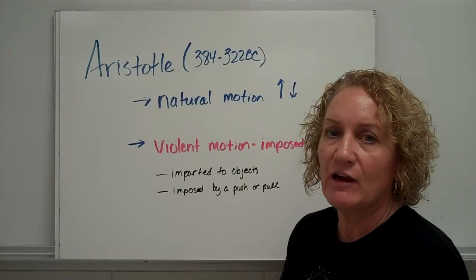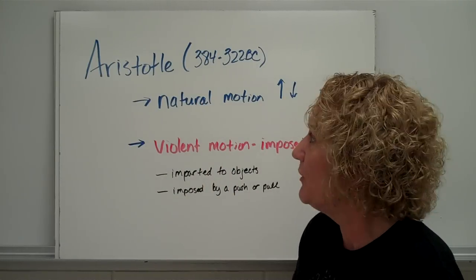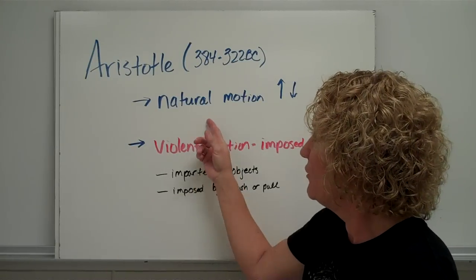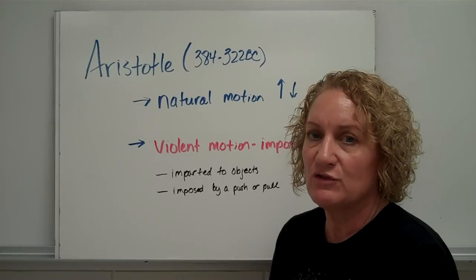We're going to start with Aristotle. Aristotle was born in 384 BC. You don't have to remember the dates. I just want you to know it was a long time ago. And he said there were two kinds of motion. There was natural motion and violent motion. Natural motion was what things wanted to do naturally.